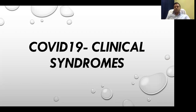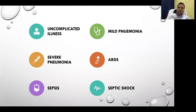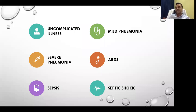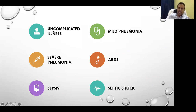Now moving to the clinical syndromes. We have seen the clinical staging of SARS-CoV-2 leading to COVID-19: Stage 1 is the early phase, Stage 2 is the pulmonary phase, and Stage 3 is the hyper-inflammatory stage. The presentation can be uncomplicated illness, mild pneumonia, severe pneumonia, or it leads to acute respiratory distress syndrome (ARDS), sepsis, septic shock, respiratory failure, cardiac failure, and death — six clinical syndromes. Eighty percent of patients fall into the uncomplicated illness group. The remaining 20% are distributed among mild pneumonia, severe pneumonia, and ARDS, with 5% moving to sepsis and septic shock.